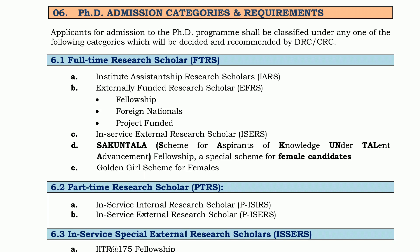First, talking about PhD admission categories. Full-time research scholars include: full-time institute assistantship research scholars and externally funded research scholars — candidates having fellowship, foreign nationals, or project funded. Third category is in-service external research scholars. Fourth is Kuntla scheme for aspirants of knowledge under talent advancement fellowship, a special scheme for female candidates. Fifth is Golden Girl scheme for females.